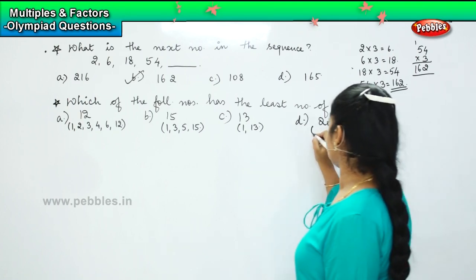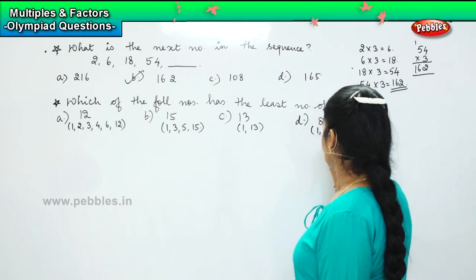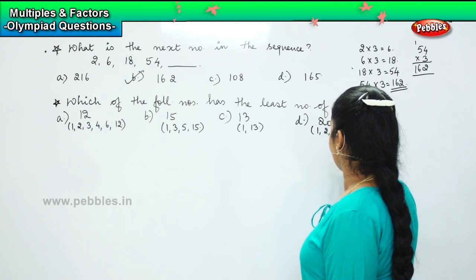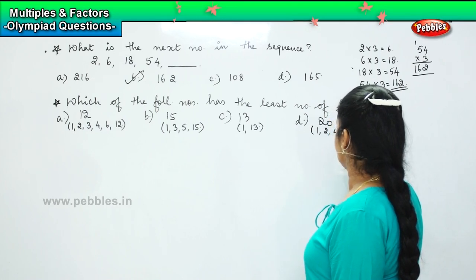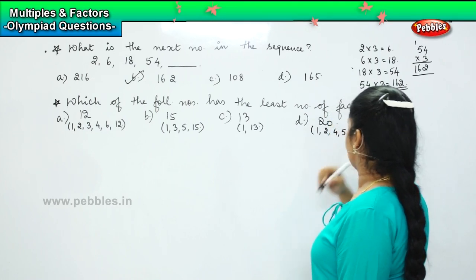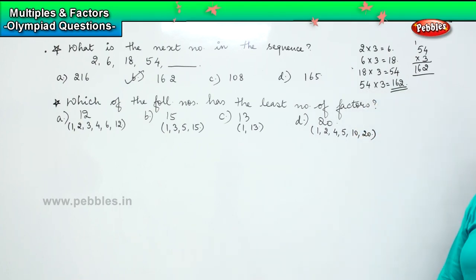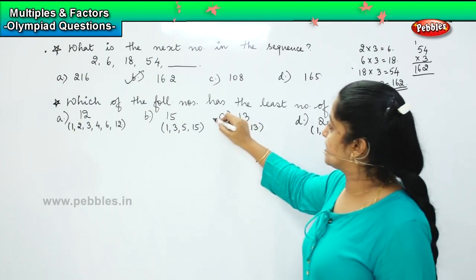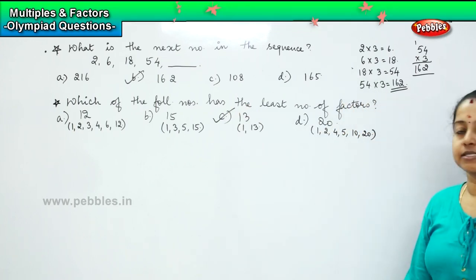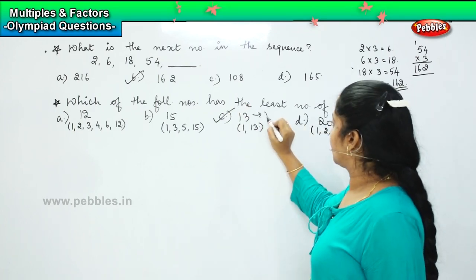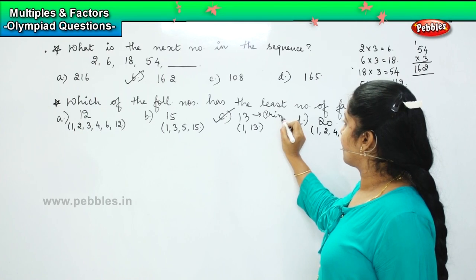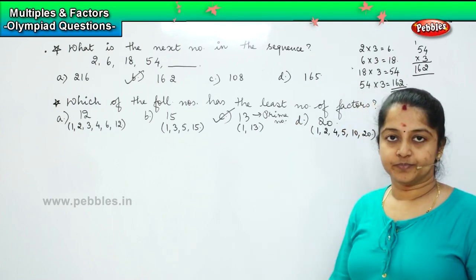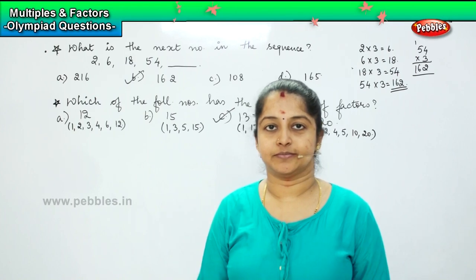Coming to 20, the factors are 1, 2, 4, 5, 10, and 20. So which is having the least number of factors, children? It is Option C, 13, because it is a prime number.